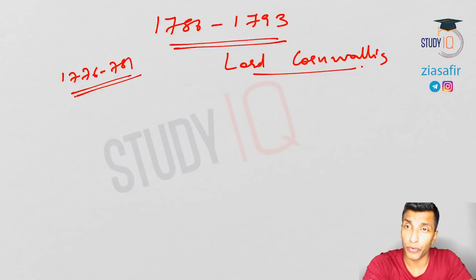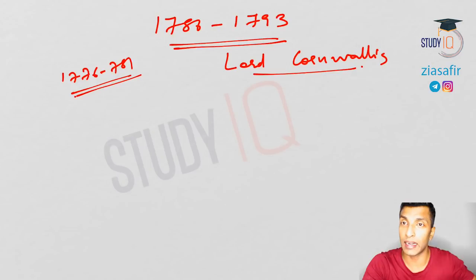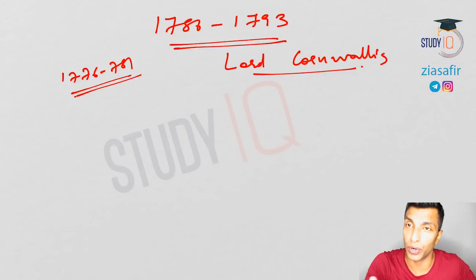We will always get a question on the reforms introduced by Lord Cornwallis. He made certain reforms that are still relevant today. For example, judicial reforms — when we talk about equality before law and rule of law, these concepts are still followed. Police reforms and civil service were also introduced by Lord Cornwallis. We'll first see the reforms and then other events during his time.